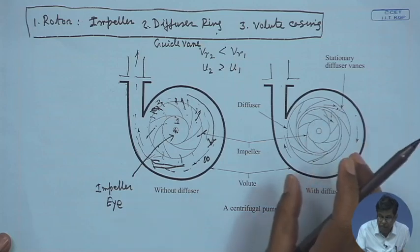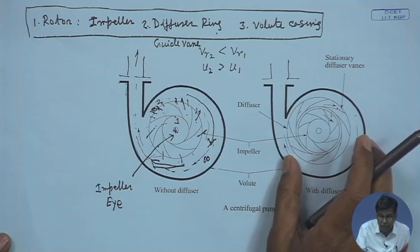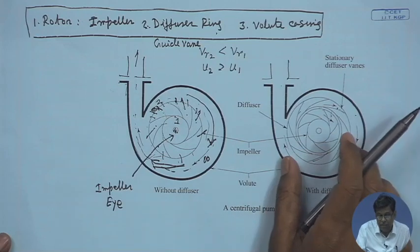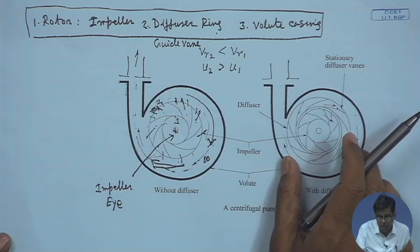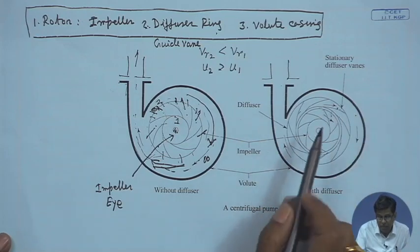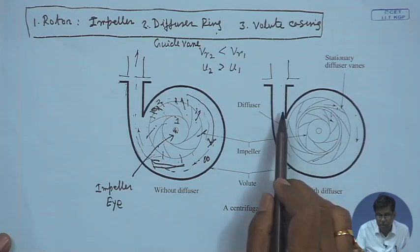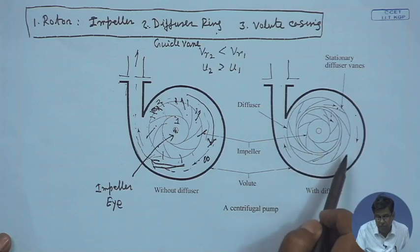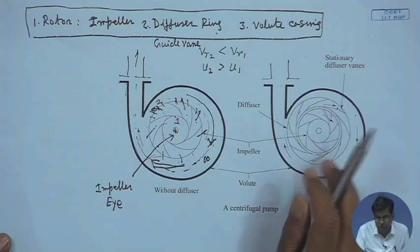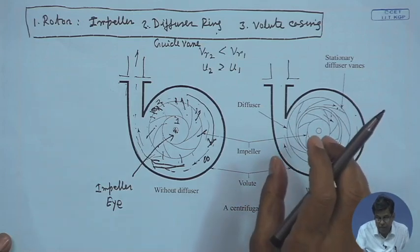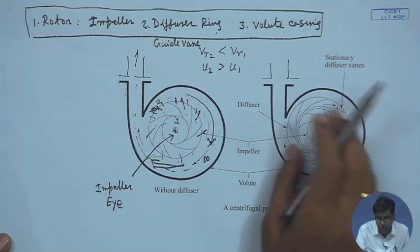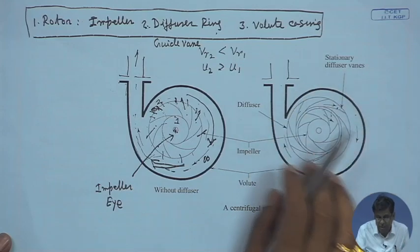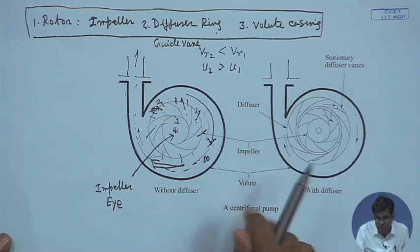If you provide a vane diffuser, the pump becomes more compact with efficient conversion of kinetic energy into pressure energy. The process of diffusion becomes more efficient within a relatively smaller area, meaning the size of the pump is less.